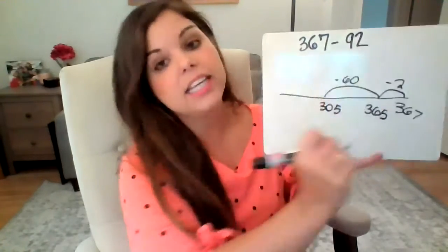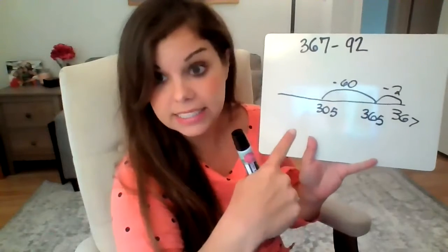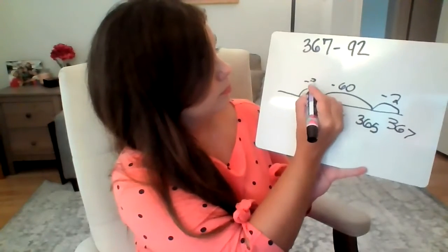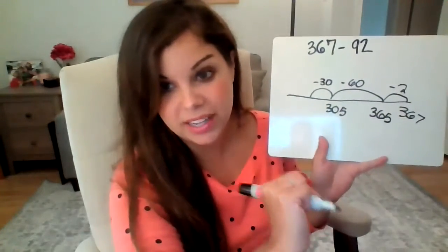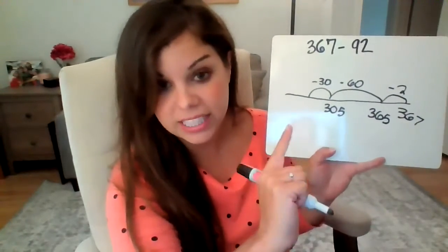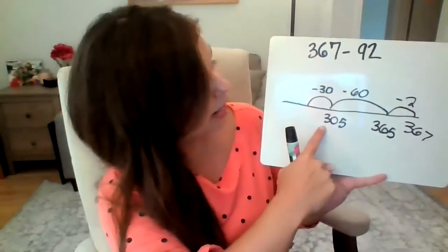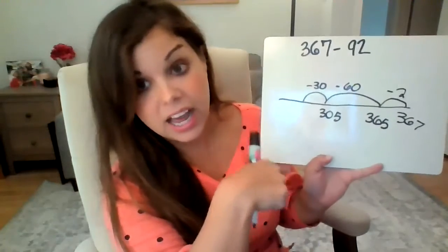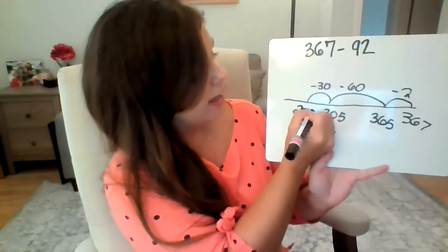And 90 is 60 and 30. So now that I've taken away 60, I'm also going to take away 30. And this is where making 10 is really helpful because I know that 30 and 70 make 100. So if I take away 305 minus 30, I know that that is 275.